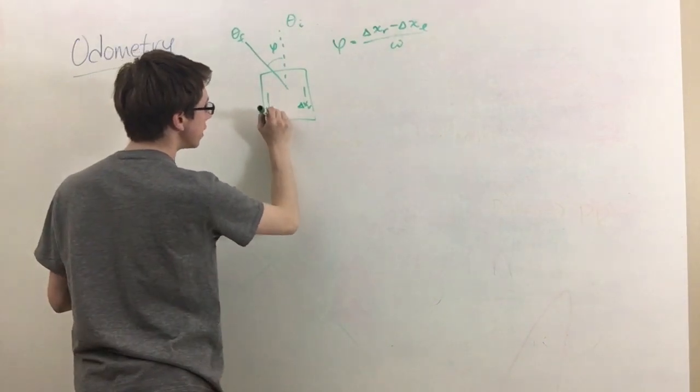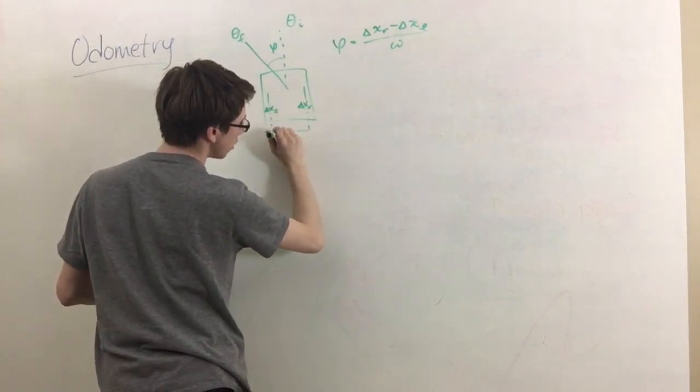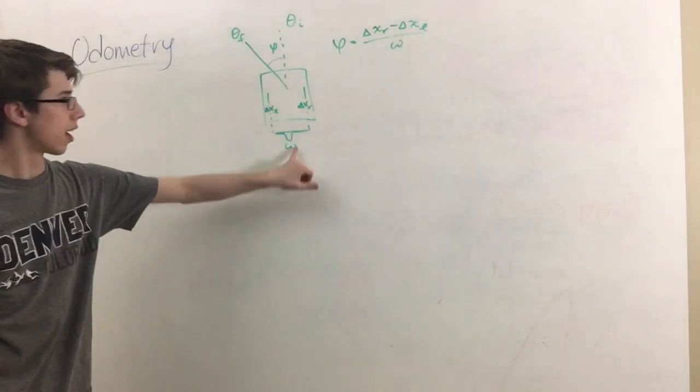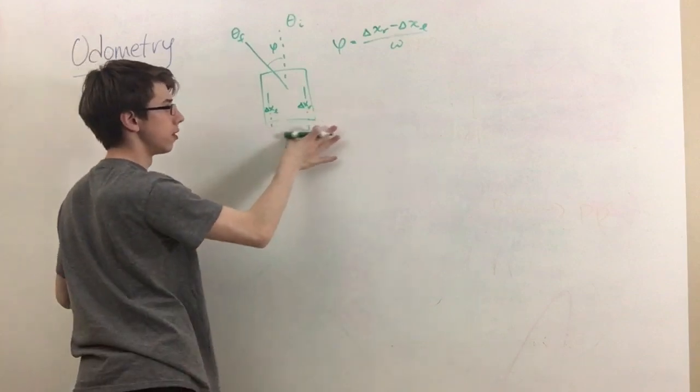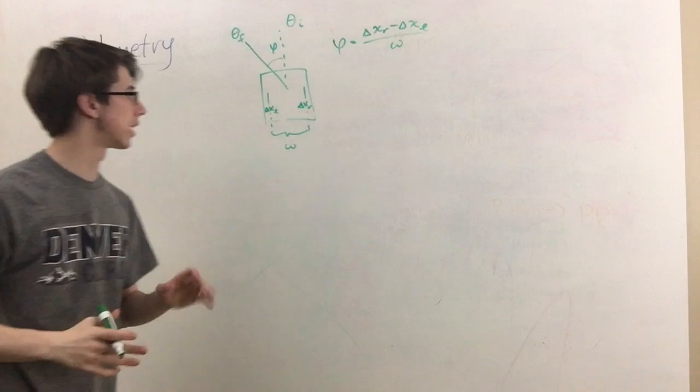Now what is w? Well, it's the distance between the centers of our odometers and this is also referred to as our track width.